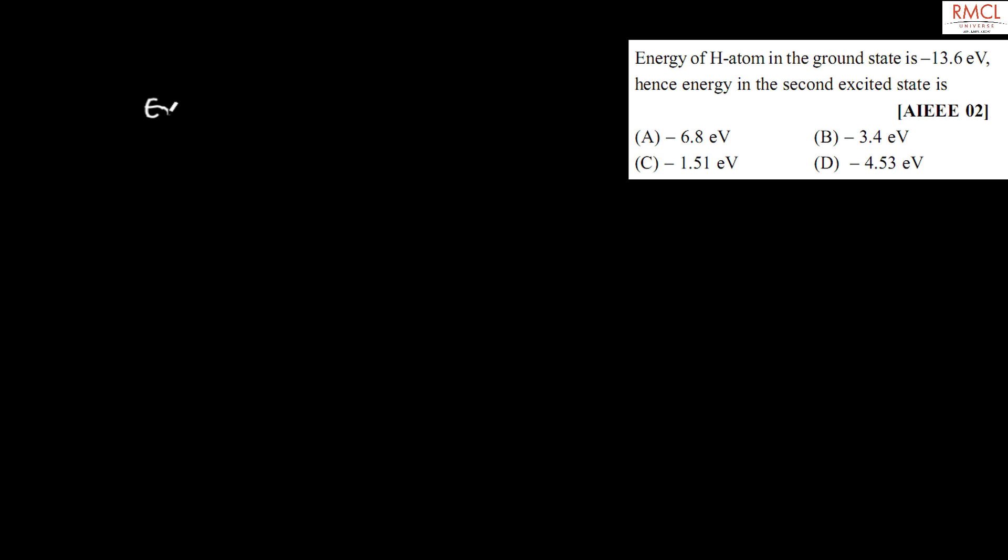We know that energy of nth orbit is E_n equals minus 13.6 upon n square electron volt.